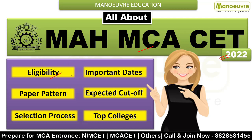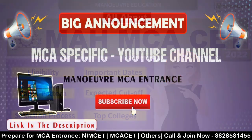We will talk in detail about the eligibility criteria. Many students have doubts whether BA, BSc, and BCom students can apply for MCA - yes, obviously. We'll cover what the bridge course is, important dates, paper pattern, expected cut-off. Students have a doubt about negative marking this year - whether it's there or not. Selection process, top colleges, and what are the expected cut-offs to target those top colleges.